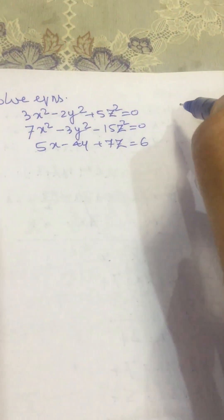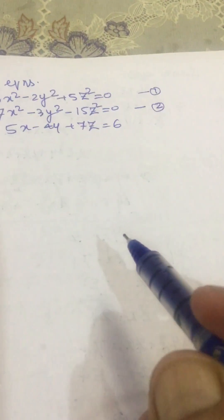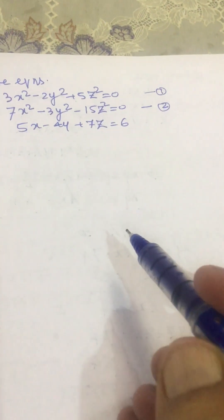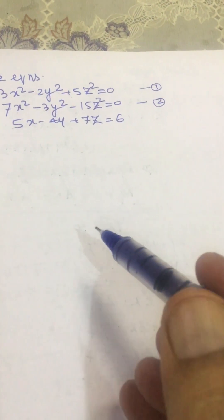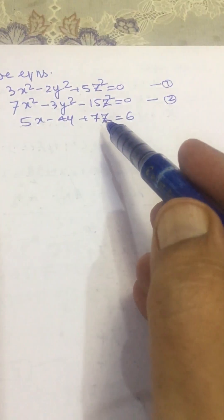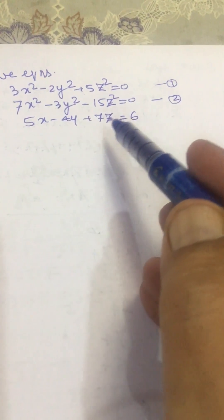So, from equations 1 and 2 we will find the values of x², y², and z² using cross multiplication, and then we will put those values into the third equation and determine the values of x, y, and z.